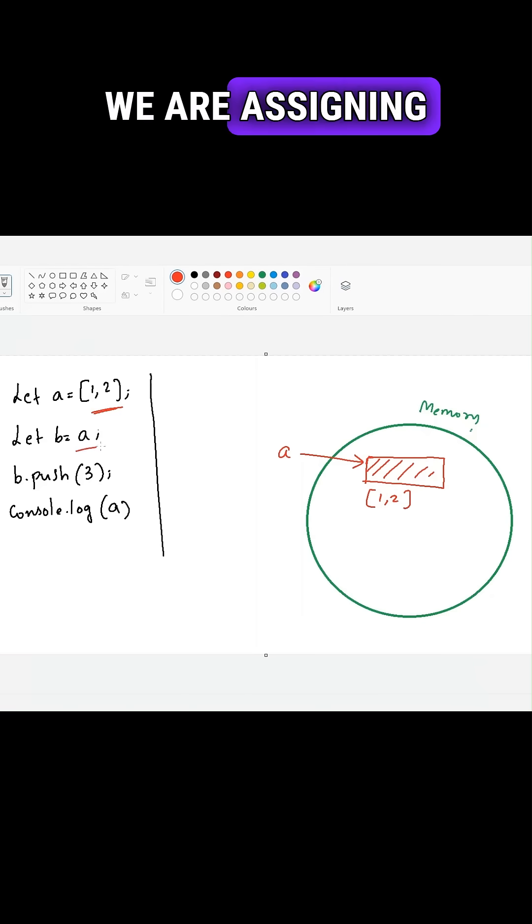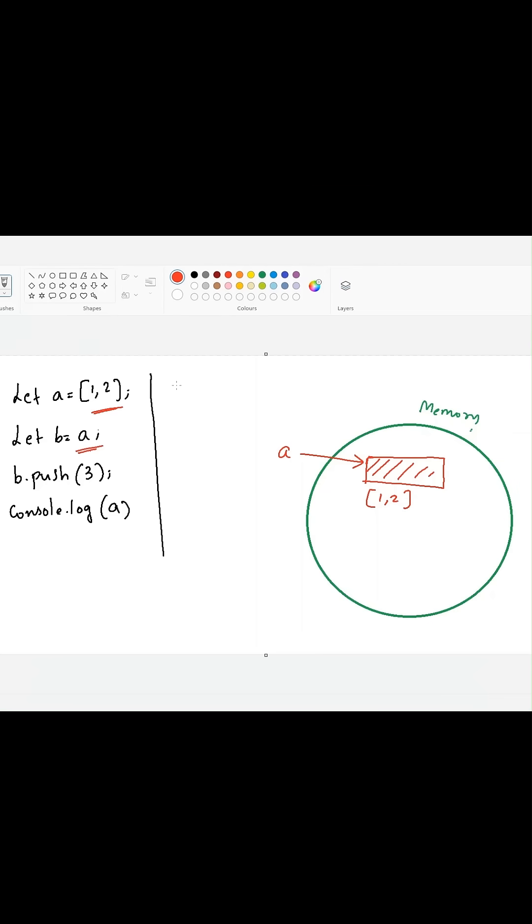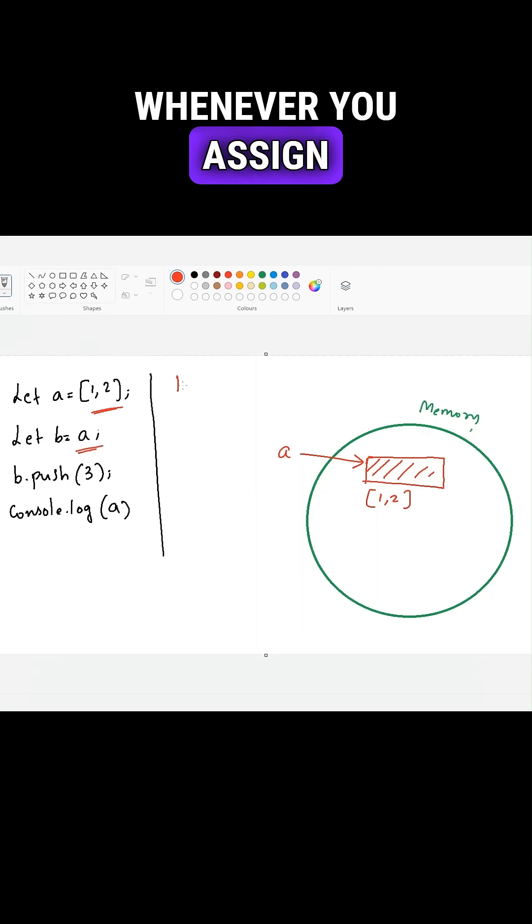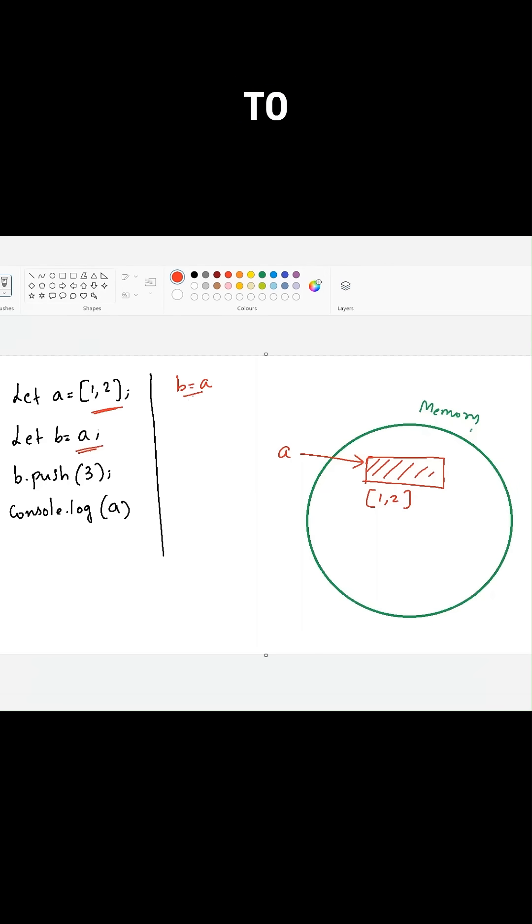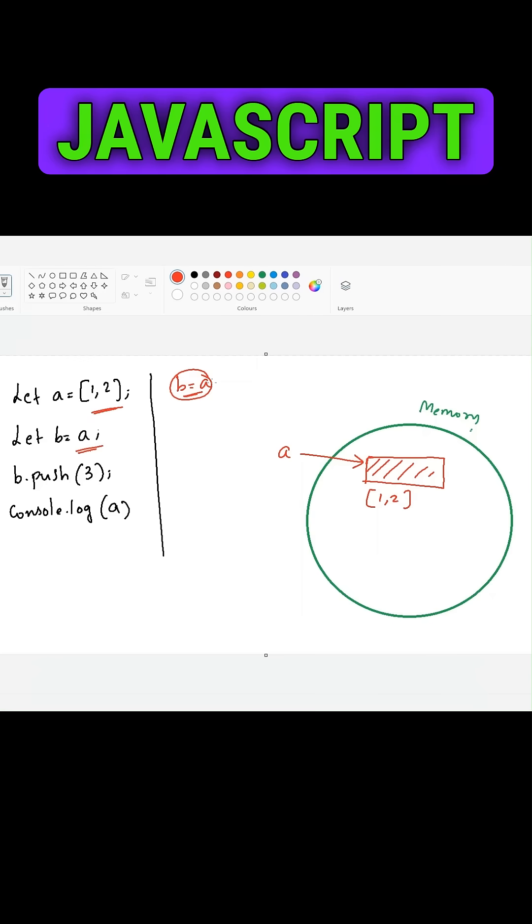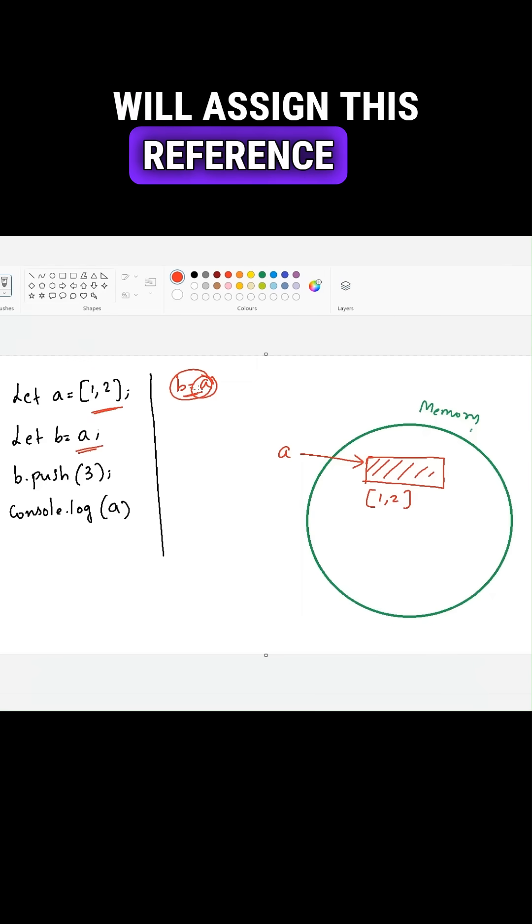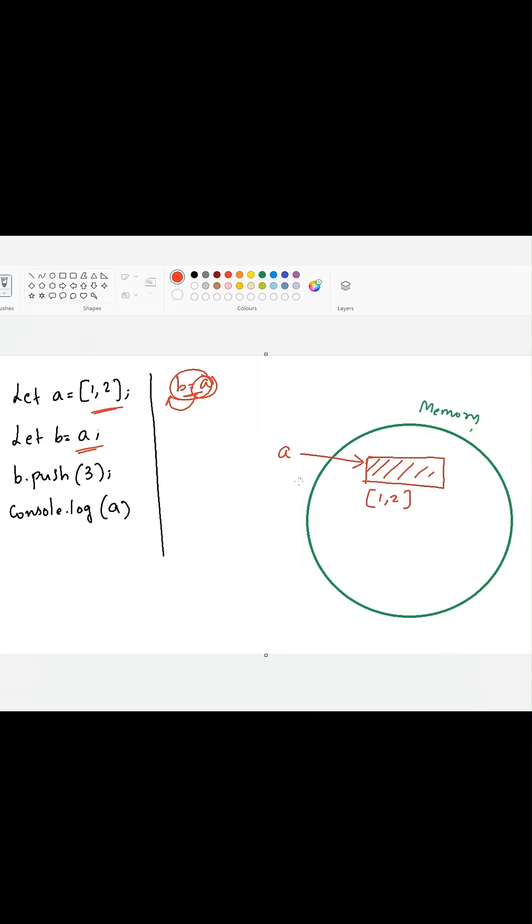In the second line, we are assigning B is equal to A. In JavaScript, whenever you assign an array to a new variable, JavaScript engine will assign this reference to this particular variable. So due to this, B will be pointing out to the same location in the memory. Now the value of B will become one comma two.